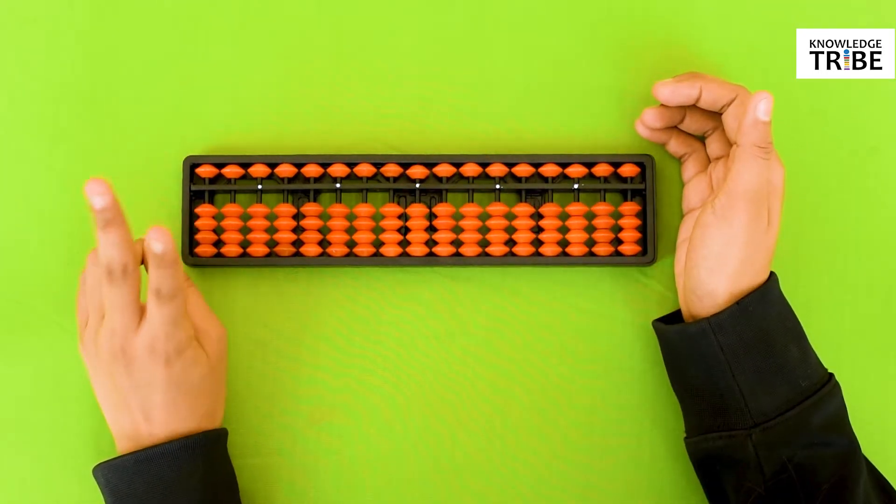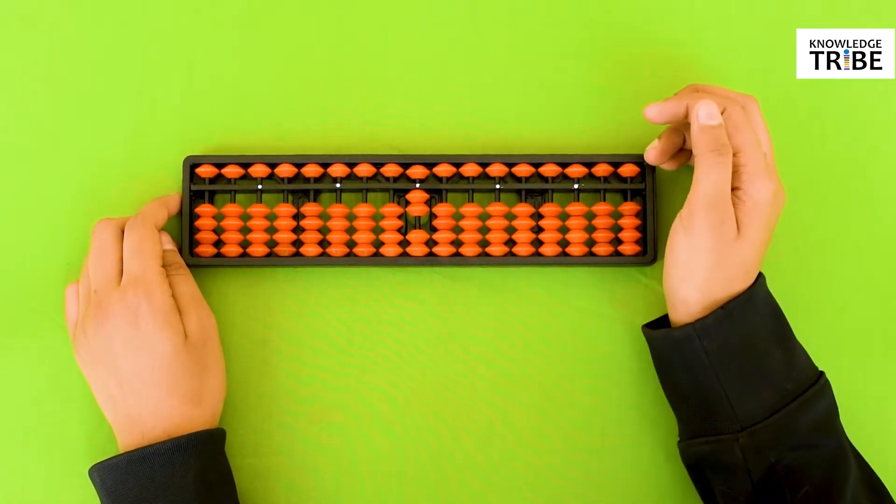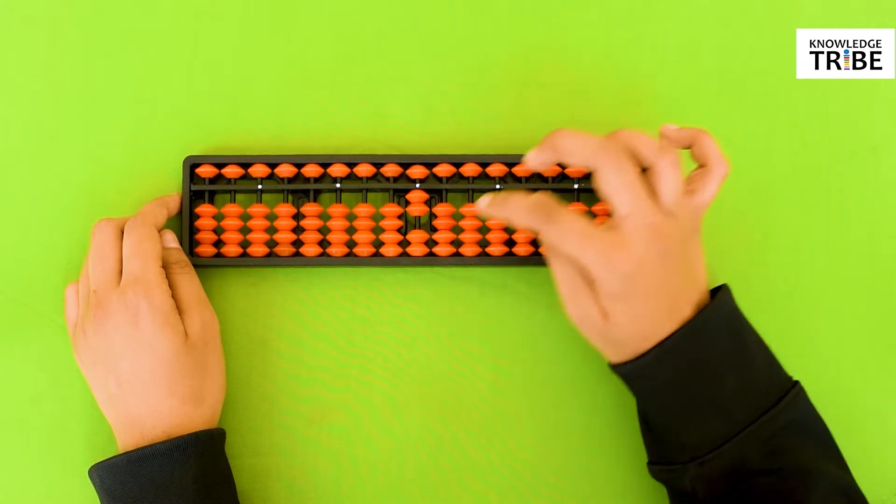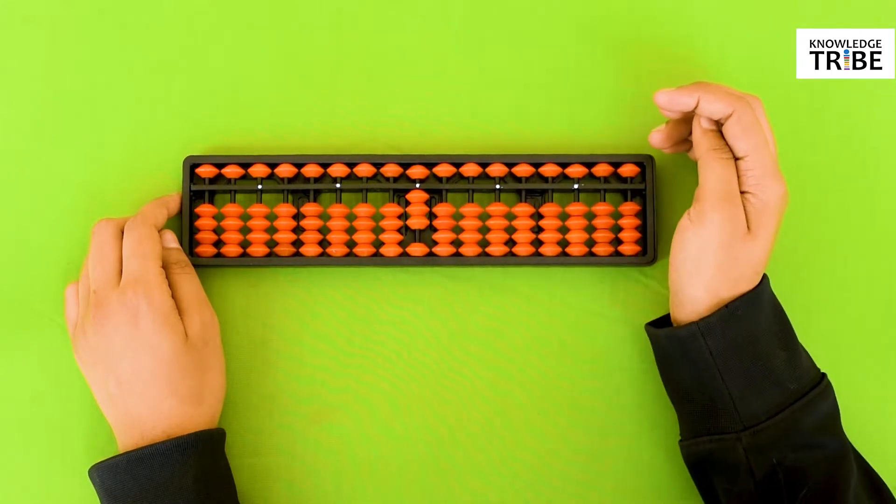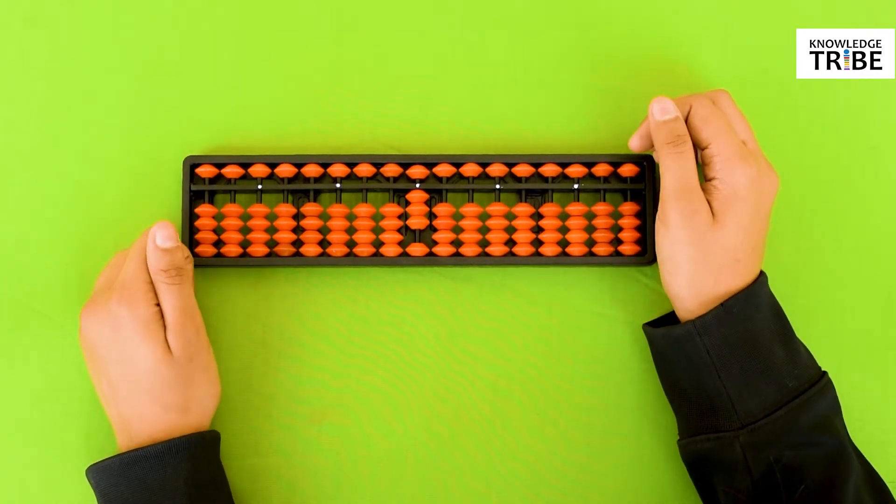2 plus 1. First we add 2 earthly beads. To that we add another earthly bead. So we get the answer 3. 2 plus 1 is equal to 3. Pretty simple right?